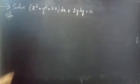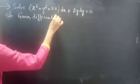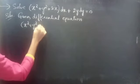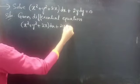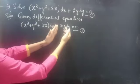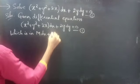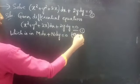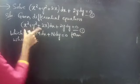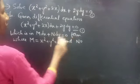Solution. Given differential equation: x squared plus y squared plus 2x into dx plus 2y dy equals to 0. Consider it as equation 1, which is in M dx plus N dy equals to 0 form. By comparing these two, we will get M and N: M equals to x squared plus y squared plus 2x, and N equals to 2y.